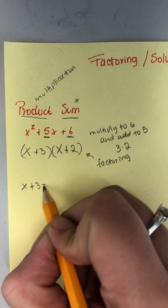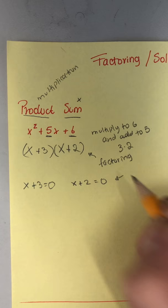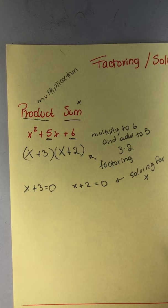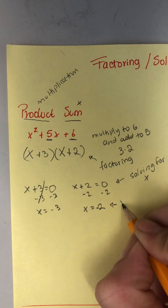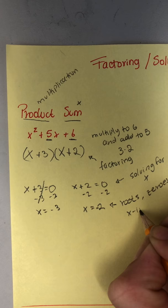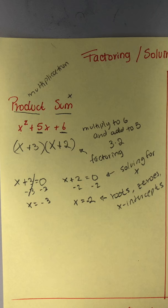Now when it comes to actually solving for x, we're going to set each of these equal to zero. So x+3=0, minus 3 from both sides, x equals negative three. And x+2=0, minus 2, x equals negative two. These are my roots, or zeros, or x-intercepts.